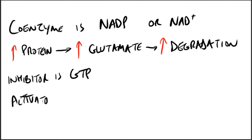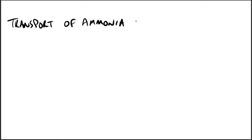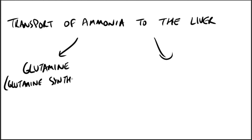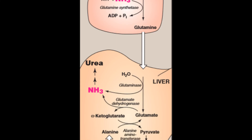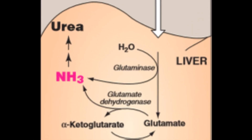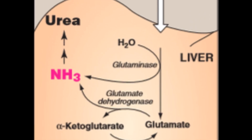Two mechanisms are available in humans for the transport of ammonia from peripheral tissues to the liver for its ultimate conversion to urea. The first, found in most tissues, uses glutamine synthetase to combine ammonia with glutamate to form glutamine. Glutamine is a non-toxic transport form of ammonia. The glutamine is transported in the blood to the liver, where it is cleaved by glutaminase to produce glutamate and free ammonia.